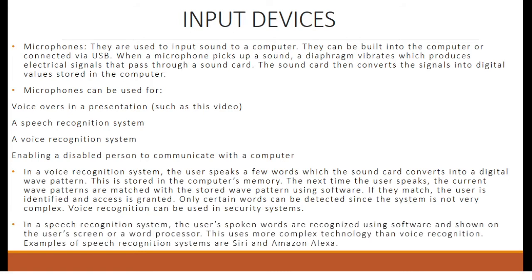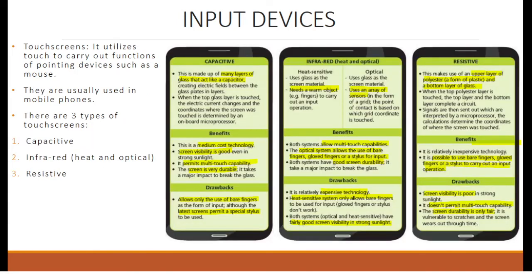In a speech recognition system, the user's spoken words are recognized using software and shown on screen or in a word processor. This uses more complex technology than voice recognition. Examples include Siri and Amazon Alexa. Touchscreens utilize touch to carry out the functions of pointing devices such as a mouse, and are usually used in mobile phones. There are three types of touchscreens: capacitive, infrared, and resistive. You can refer to the diagram on the right to see the features, advantages, and disadvantages of each type, with important points highlighted in yellow.